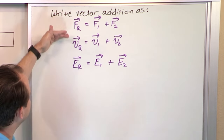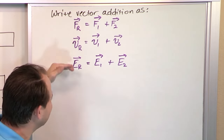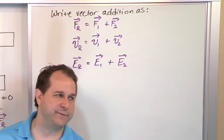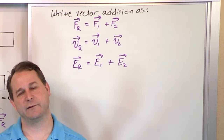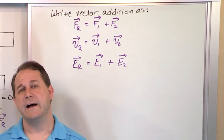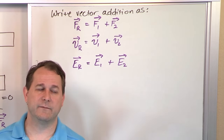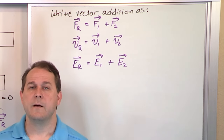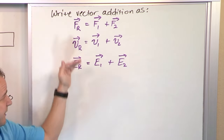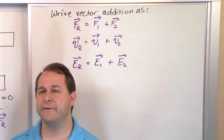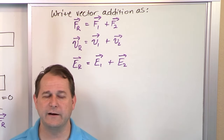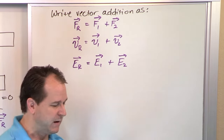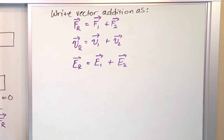In all of these cases — whether it's force, velocity, electric field, magnetic field, acceleration, or any other vector — most quantities in nature are actually vector quantities. They're different in terms of the variables and what they represent, but the vector addition itself is exactly the same. Once we know they're vectors, they're all treated the same way in terms of how to add them. So let's figure out how to add these guys.